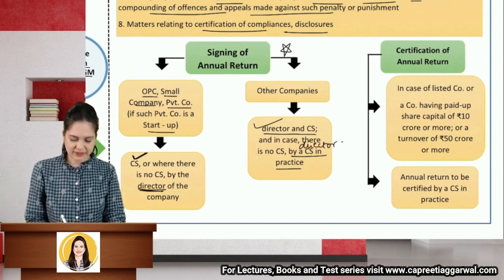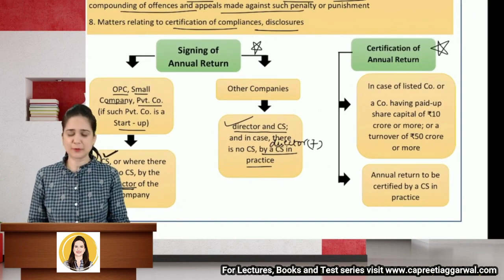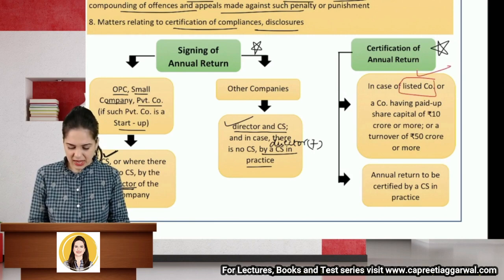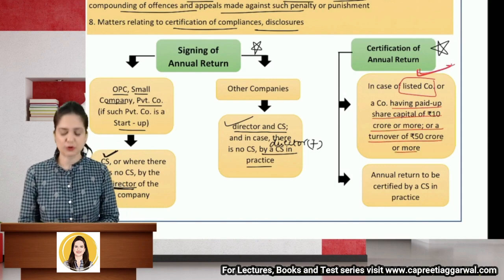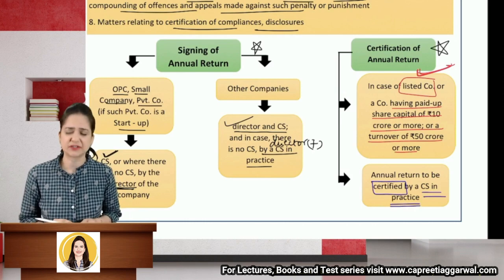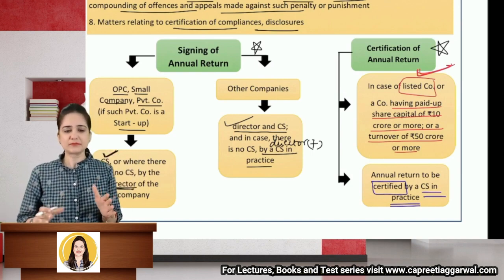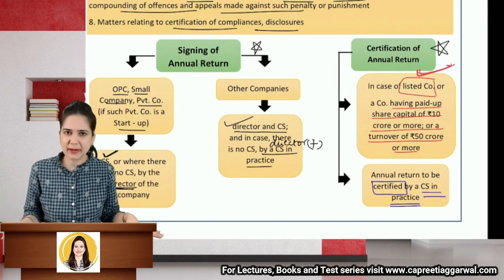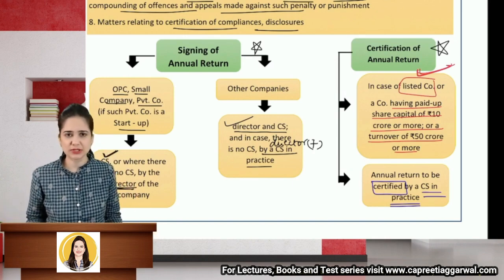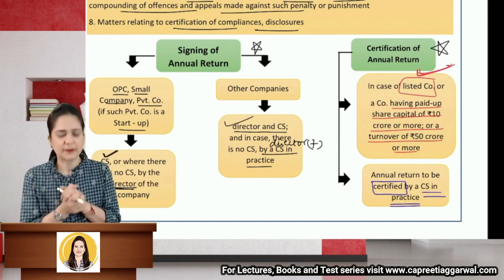For a listed company, or a company with paid-up capital of ₹10 crore or more, or turnover of ₹50 crore or more, the annual return must be certified by a company secretary in practice. The certificate states that all requirements have been properly complied with and the information given is correct to the best of his knowledge. The company files both the annual return and this certification with the ROC.